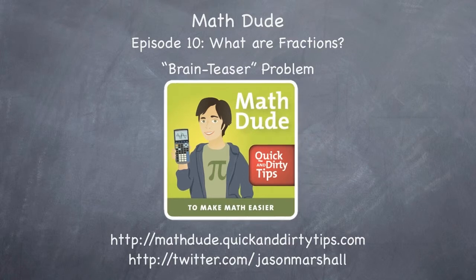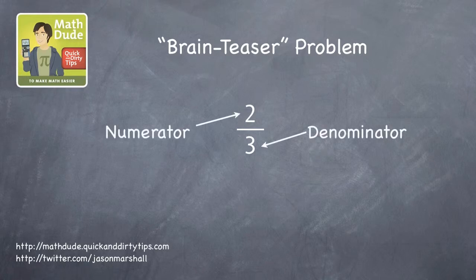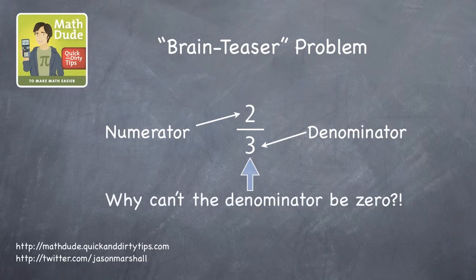In that episode, we started talking about fractions. In particular, we talked about the relationship between integers and fractions, and a bit about their numerator and denominator anatomy. At the end of the episode, I posed the question, why can't the denominator of a fraction be zero?